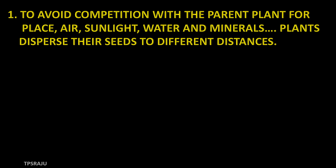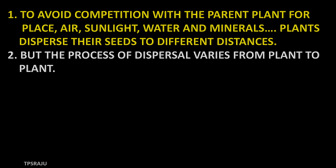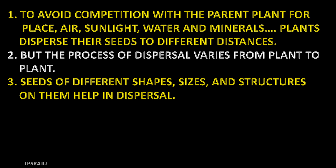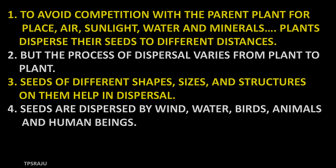To avoid competition with the parent plant for place, air, sunlight, water and minerals, plants disperse their seeds to different distances. But the process of dispersal varies from plant to plant. Seeds of different shapes, sizes and structures help in dispersal. Seeds are dispersed by wind, water, birds, animals and human beings.